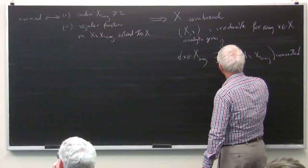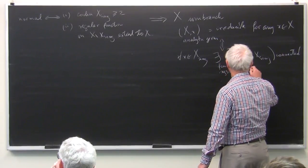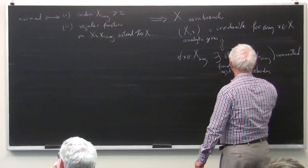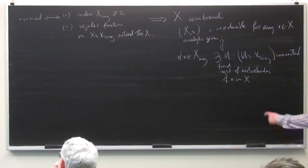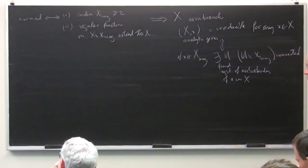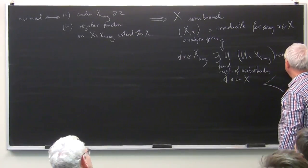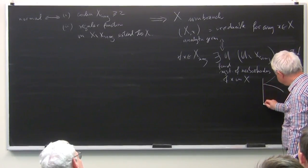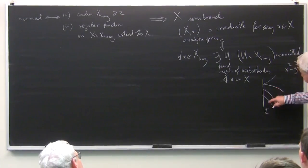As an example showing that the converse implication is not true, you just take a cusp — given by such an equation in the plane — and then you multiply with a line. You get a surface which is unibranch.